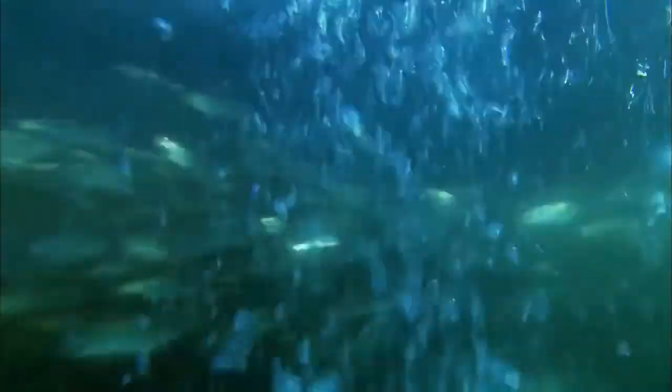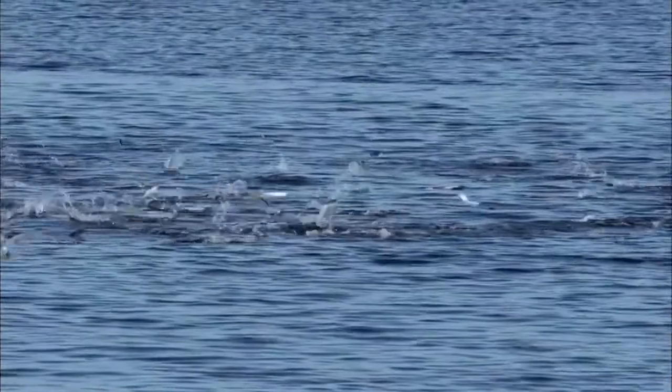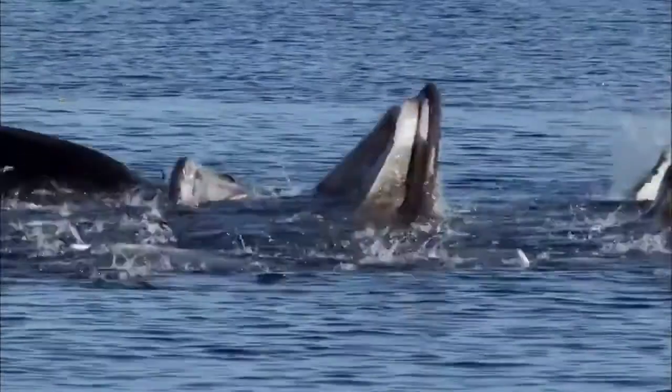Humpback whales hunt small fish by exploiting the acoustic properties of bubbles. The whales blow columns of bubbles and also send sound into those bubbles, which is trapped by them. This terrifies the fish and makes them easy prey for the whales.